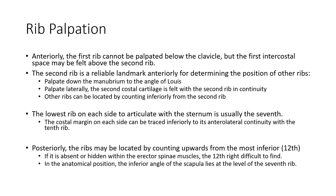For rib palpation, the first rib cannot be palpated below the clavicle in most individuals — it's typically trapped under the clavicle. The second rib is therefore the best reference point, and you can find it by locating the angle of Louis, which is the ridge between the sternal body and the manubrium at the sternal-manubrial junction. From there, you can count down to the other ribs. The lowest rib to articulate with the sternum is usually the seventh — after that we have the false ribs and floating ribs.